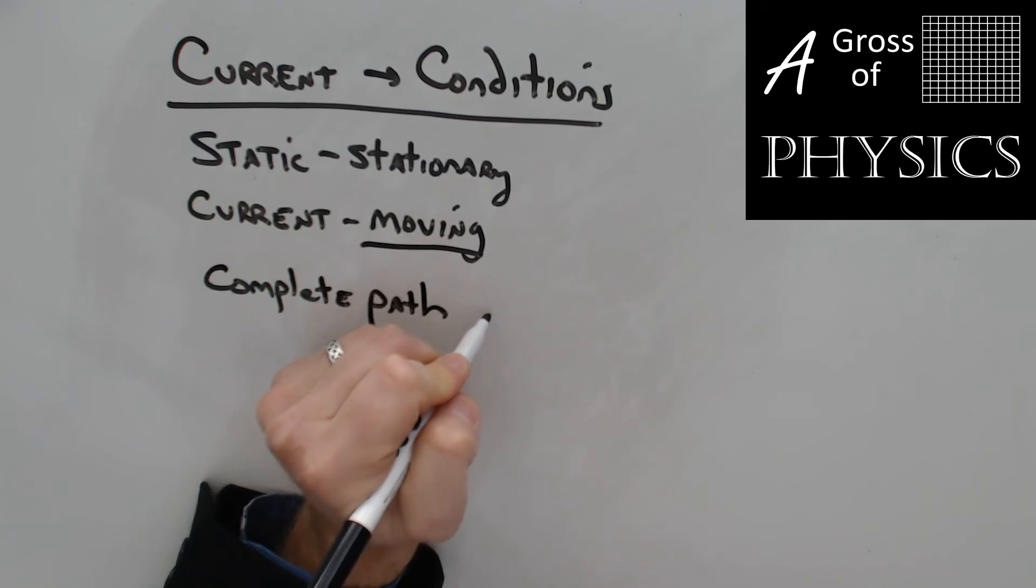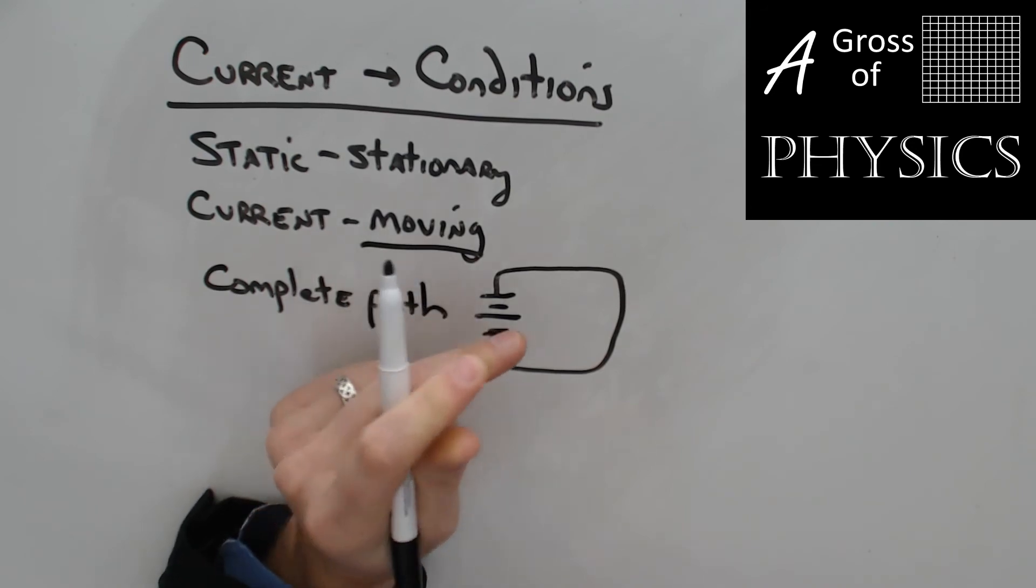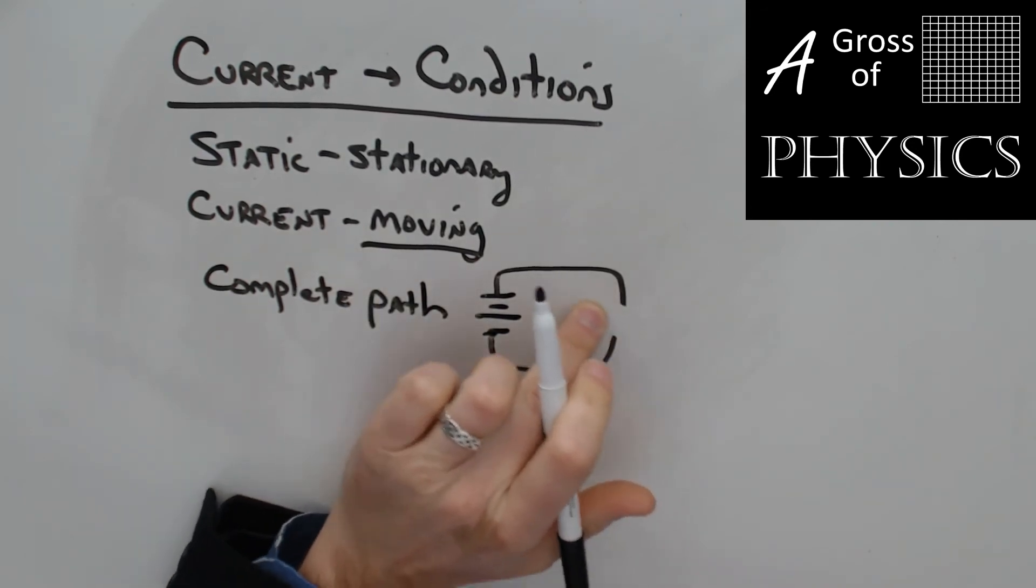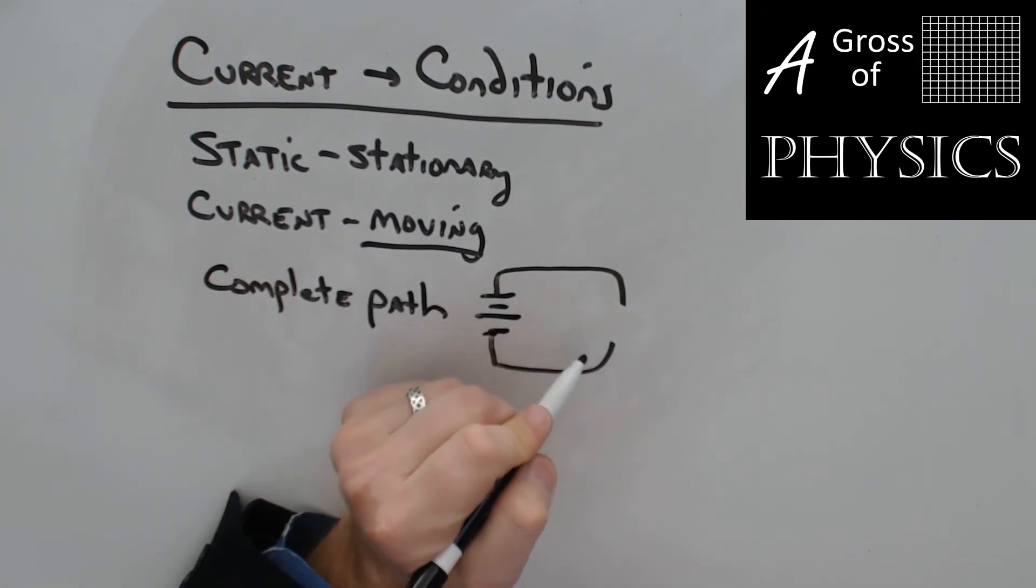Which means that if we're connecting a battery, which may look like this. This is going to be our symbol for a battery. We need to have a complete path for the current to flow. If there's a break in the path, there'll be no opportunity for the current to flow because there's a gap in the circuit.